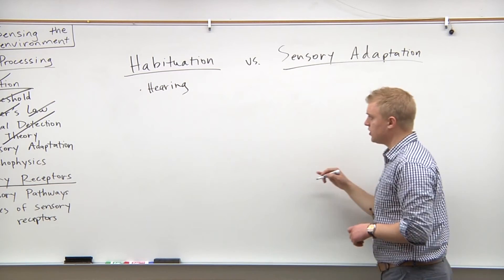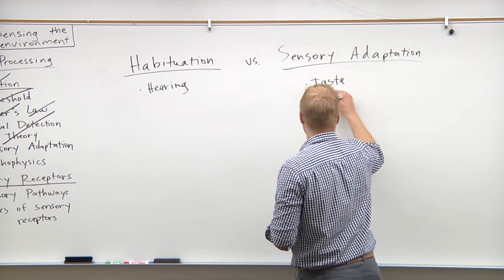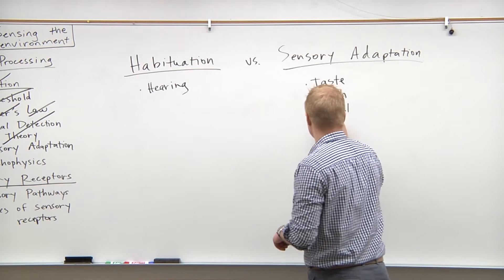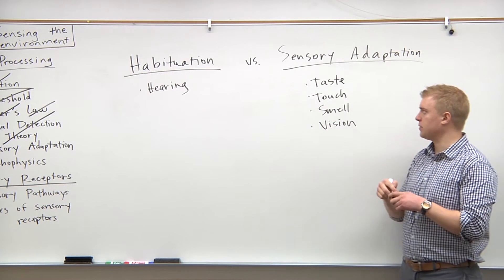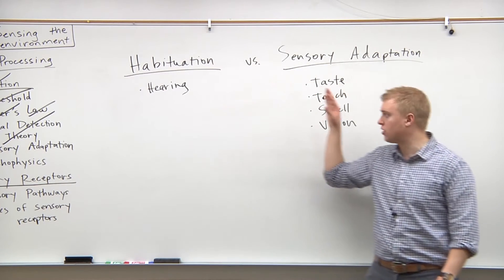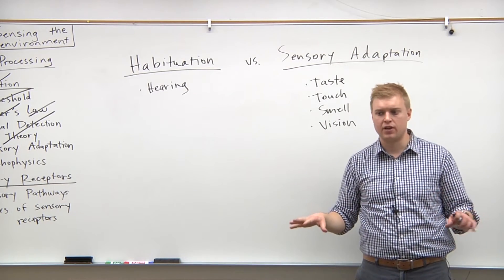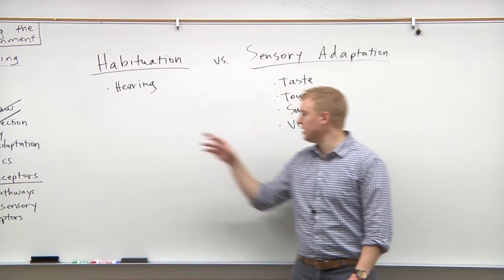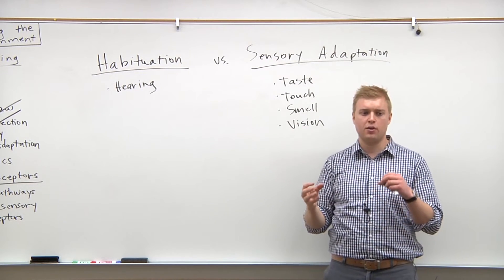With sensory adaptation, we're talking about taste, touch, smell, and vision. Sensory adaptation is different from habituation in the sense that the sensory receptors are actually becoming less responsive — they're not even sending the stimuli to the brain to be processed. With habituation, the signal is sent to the brain; with sensory adaptation, the receptors themselves become less responsive.